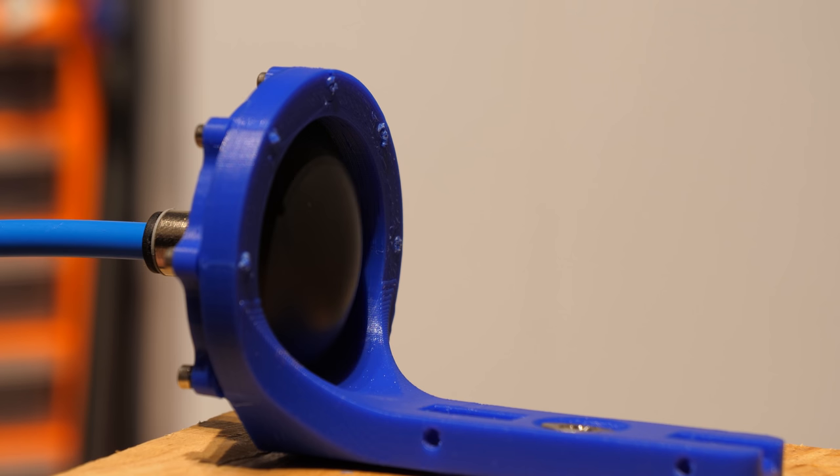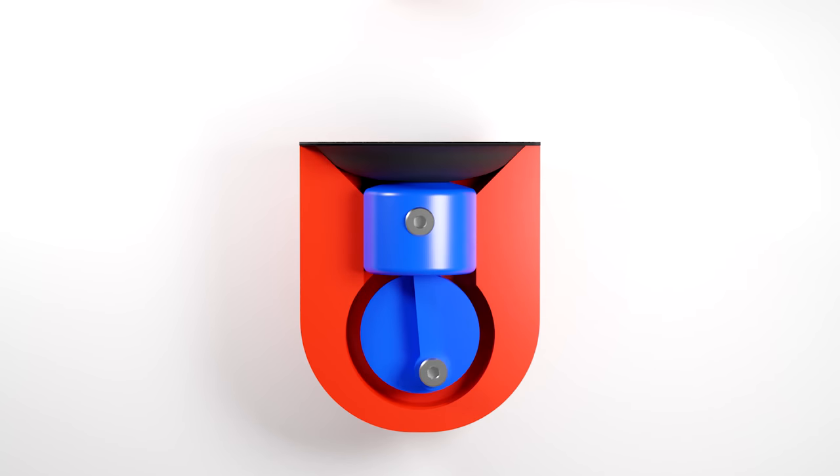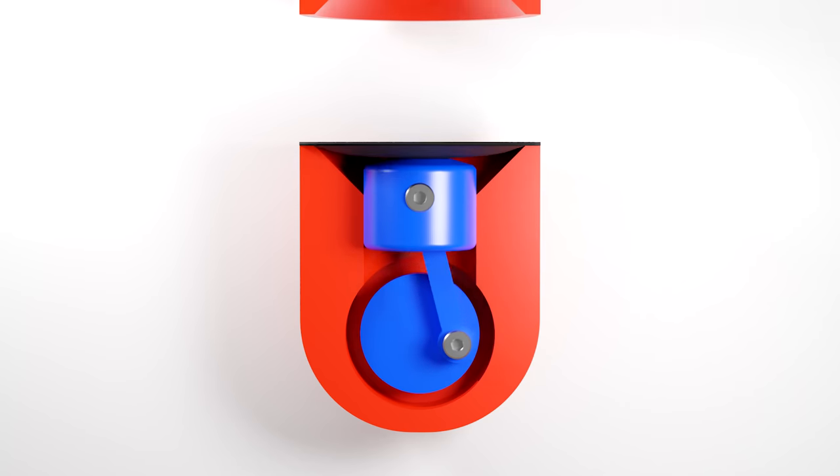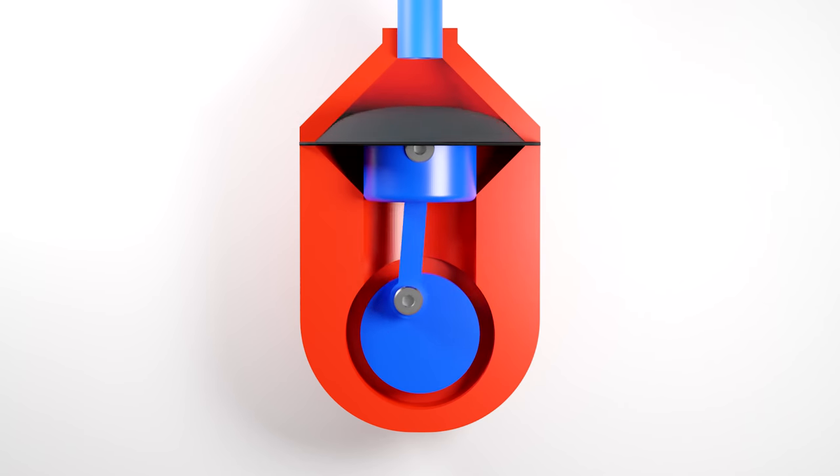This means we can make a diaphragm move by changing the pressure on either side, and I'm thinking this could be used to drive a piston inside of an engine. This would remove the issue of a non-airtight engine, as the diaphragm will contain all of the air. But this also presents another issue.